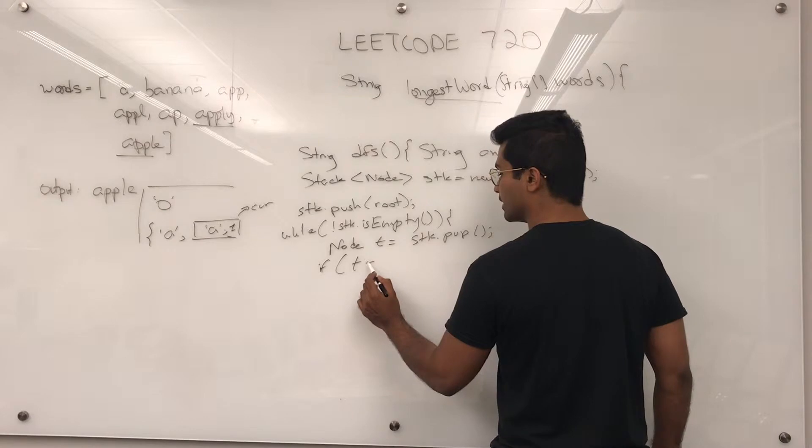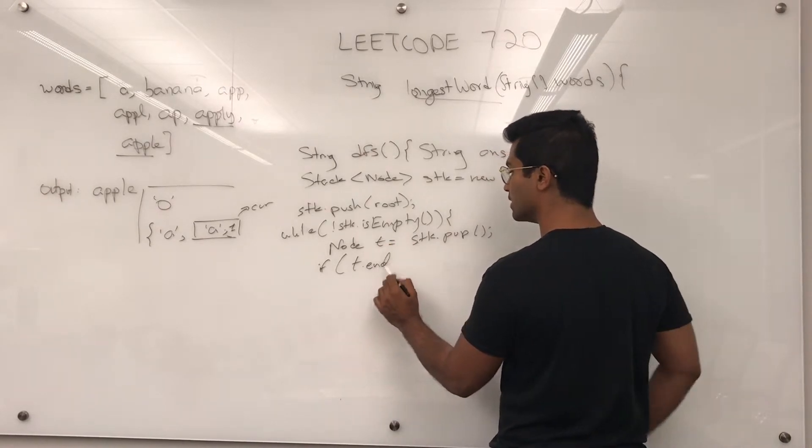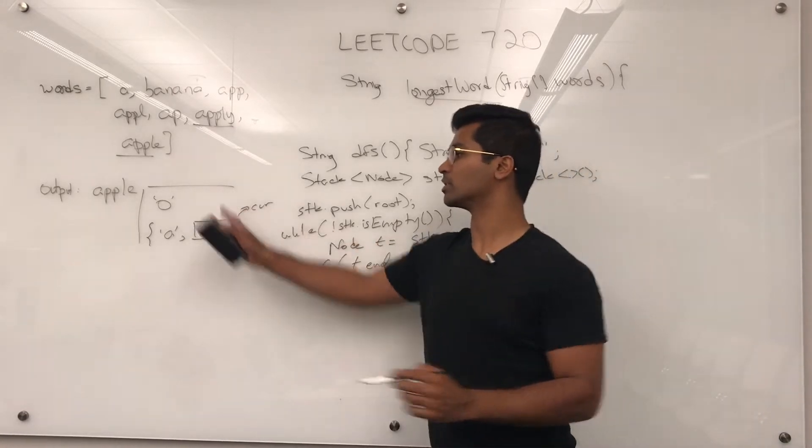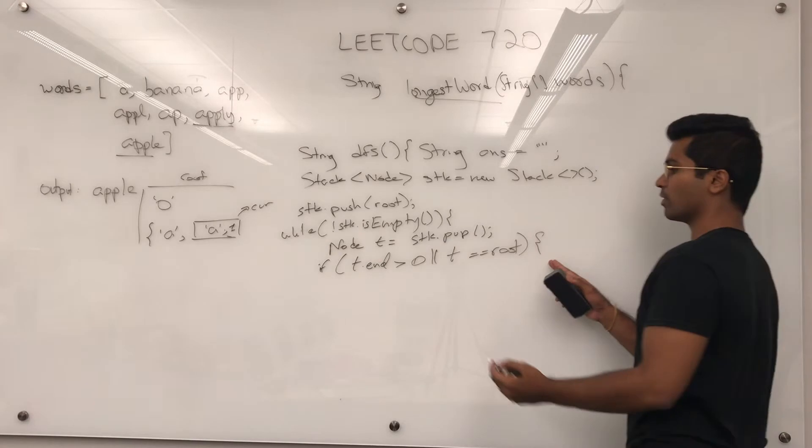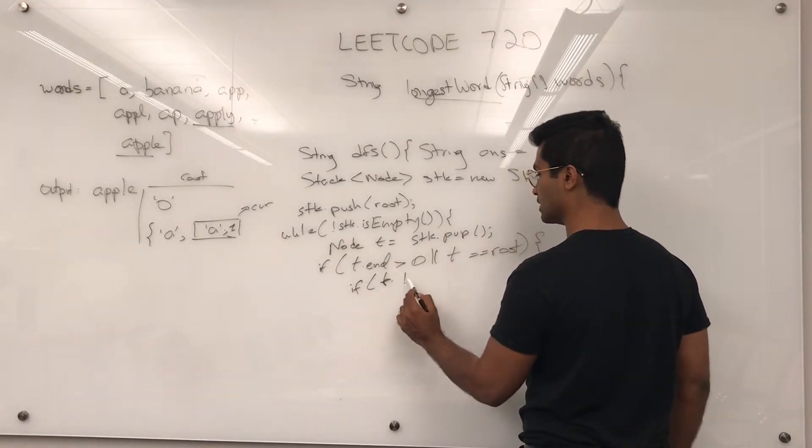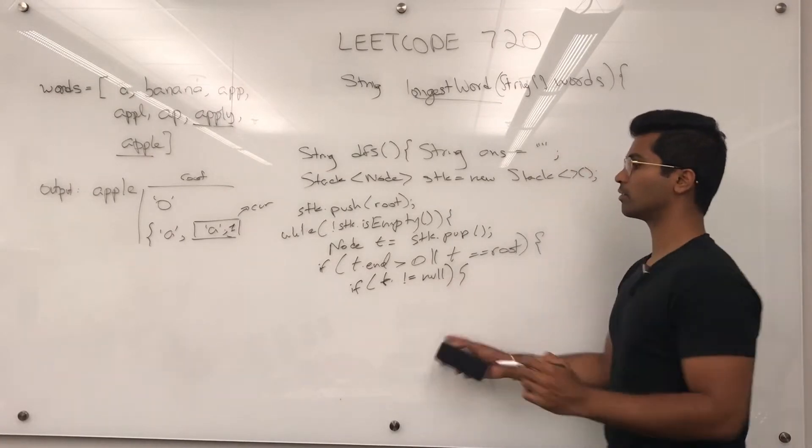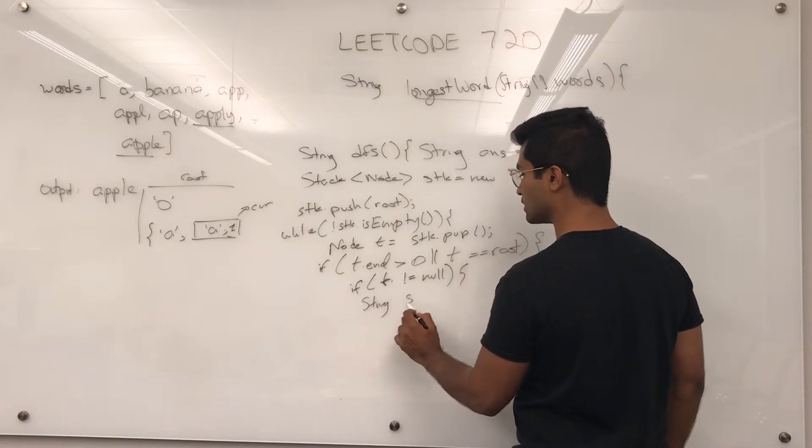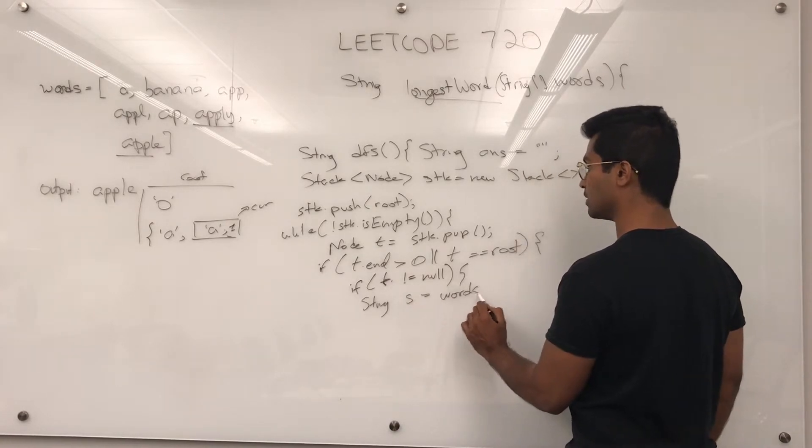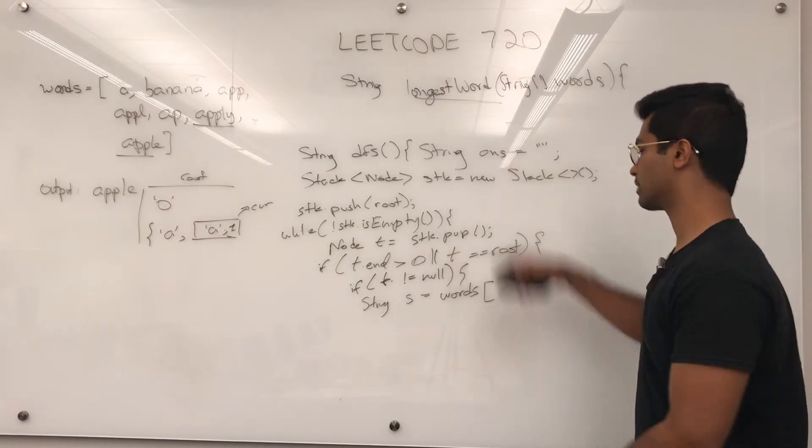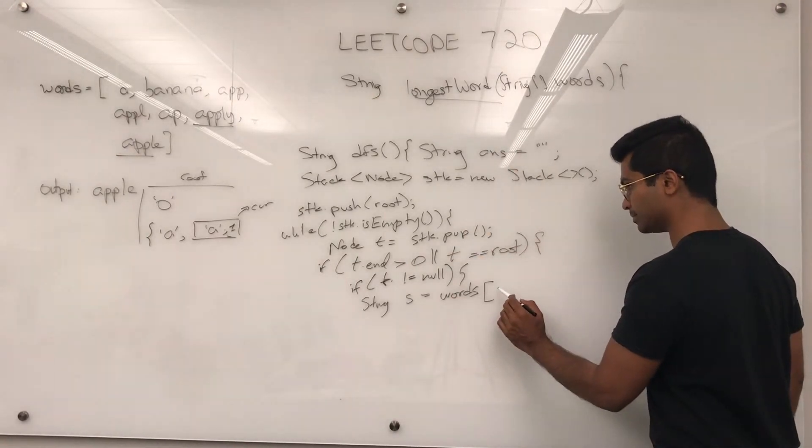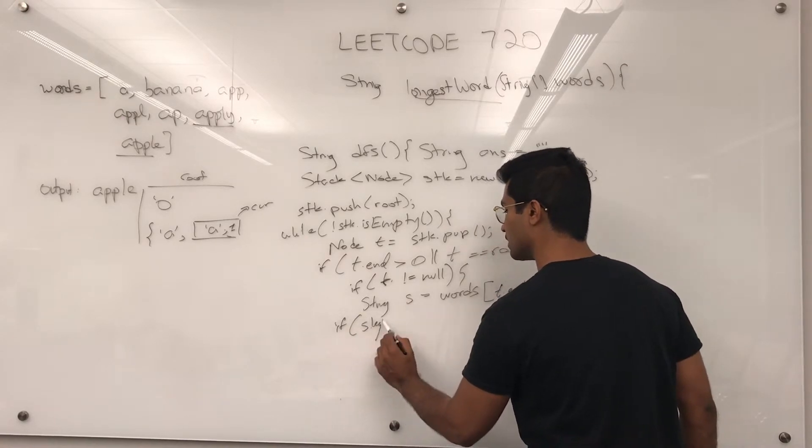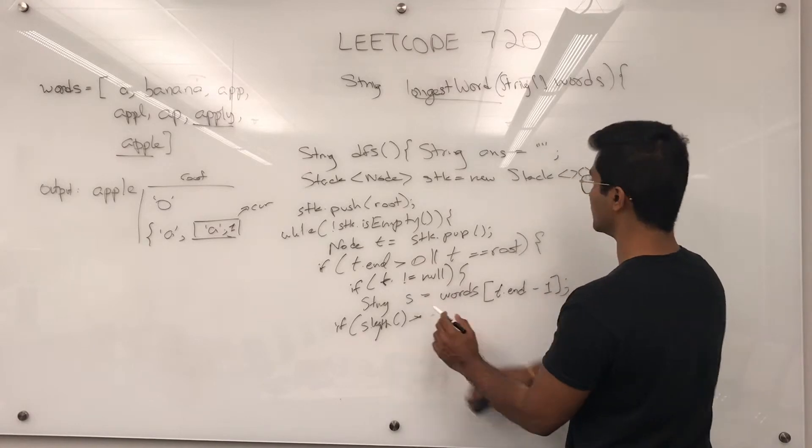If T.end is greater than zero or if T is equal to root. Since we're starting out in the beginning, T, the root doesn't have an end. It's just a dummy. So if it's that, if T is not null, then we're going to check for different things. If T is not equal to null, what we're going to do is get string S = words[T.end - 1].